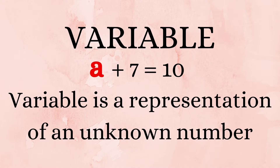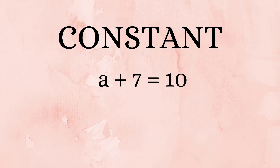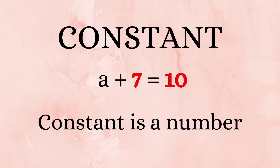Next, we have constants. In the same statement, 7 and 10 are numbers whose values are already known and fixed. These numbers are called constants. Now that we know what variables and constants are, let's start doing some basic mathematical operations on them.